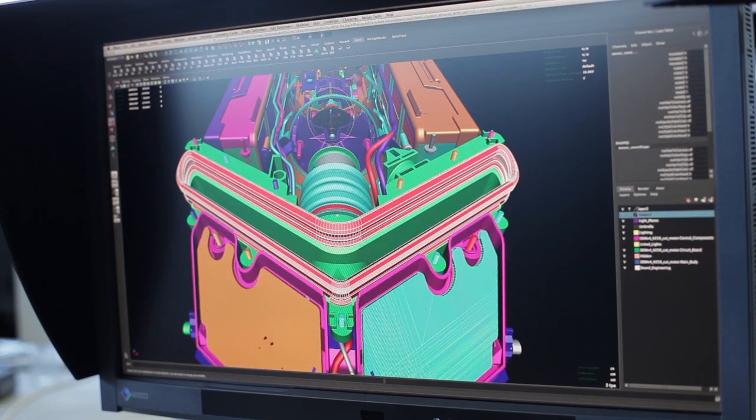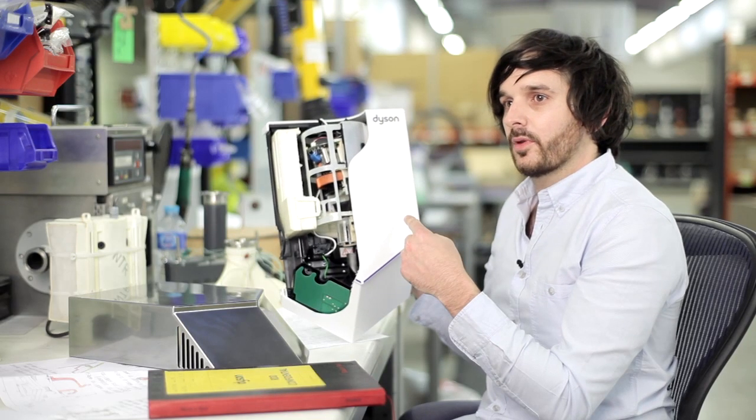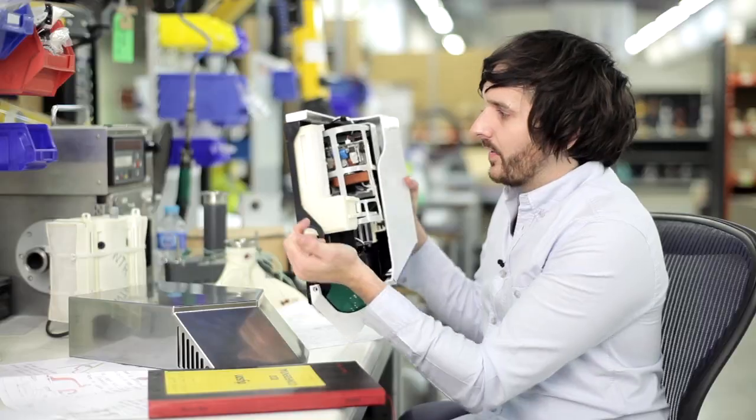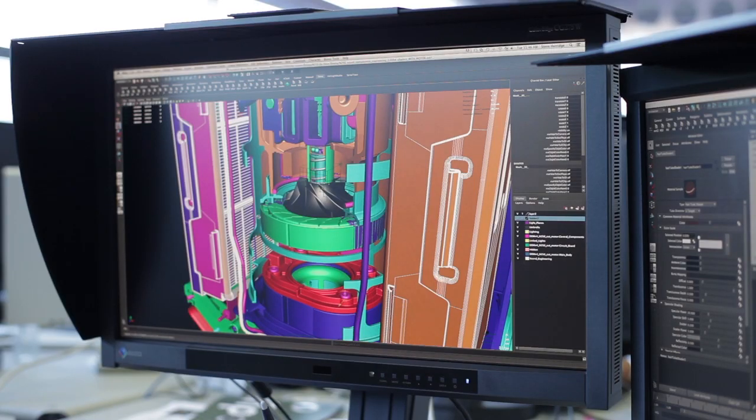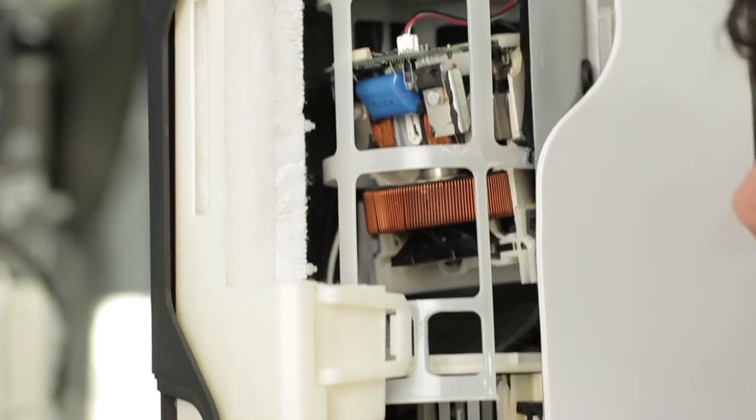When the sensors activate, that turns the motor on, which starts to draw air through the product. As the air is drawn up, it passes through our HEPA filters and then feeds the air through silencers into a duct.